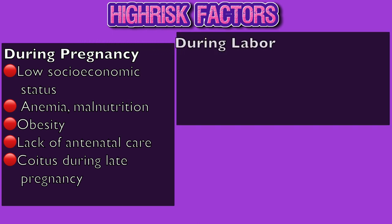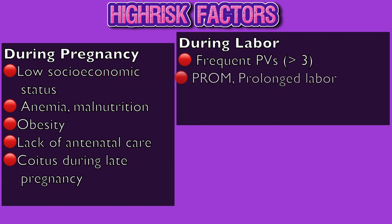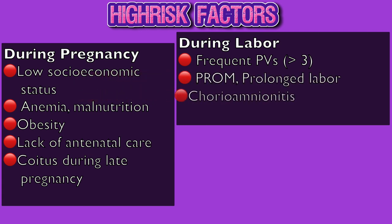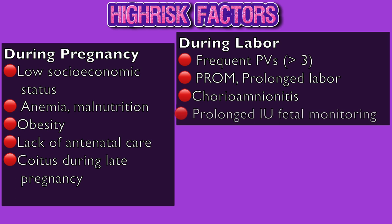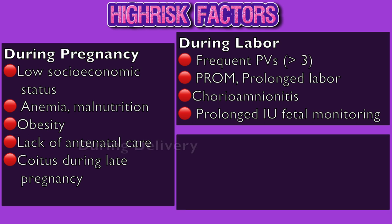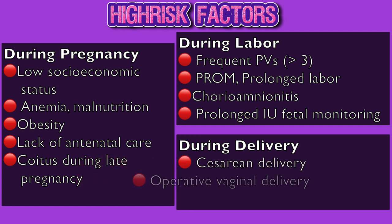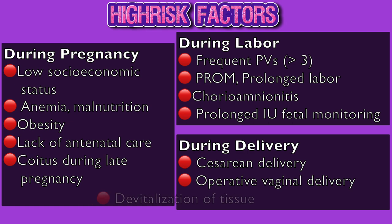The high risk factors during labour are frequent vaginal examinations, premature rupture of membranes, prolonged labour, chorioamnionitis, and prolonged intrauterine fetal monitoring. The high risk factors during delivery are caesarean delivery, operative vaginal delivery such as forceps or vacuum, and devitalization of tissue from episiotomy and haemorrhage.